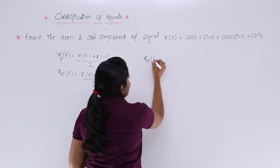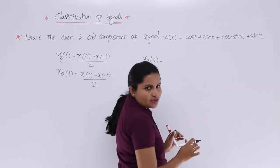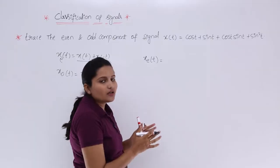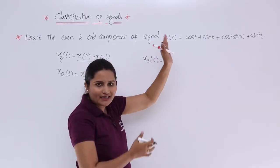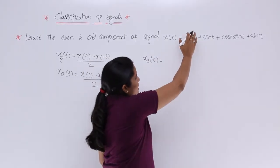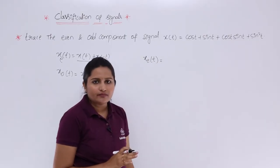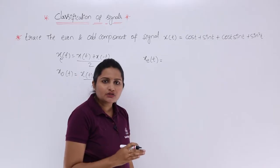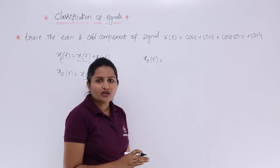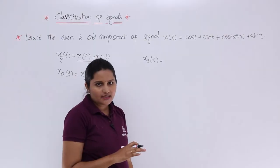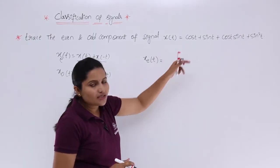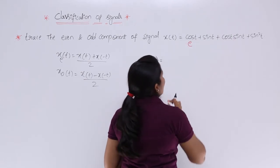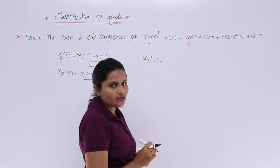To write xe(t), the even component, we want the even parts of the given signal. Consider cos t — is it even or odd? cos t is even, because substituting -t gives cos(-t) = cos t. That is why cos t is an even function, and I am marking it with 'e'.